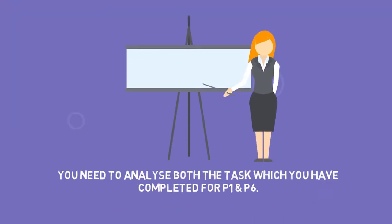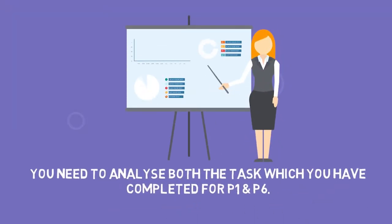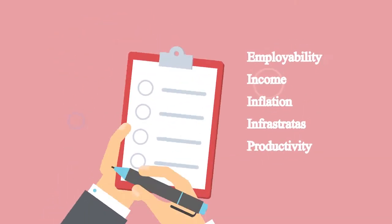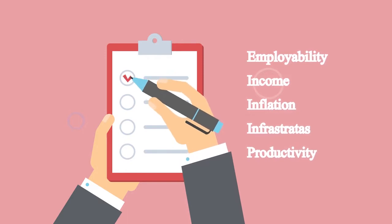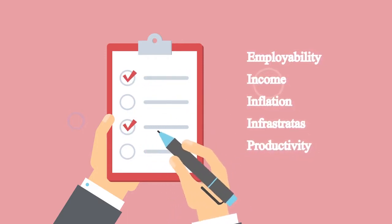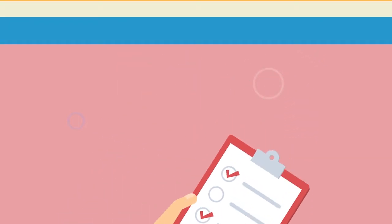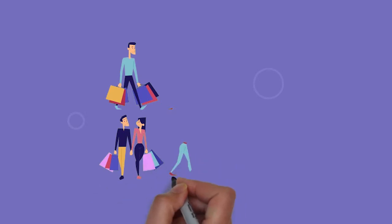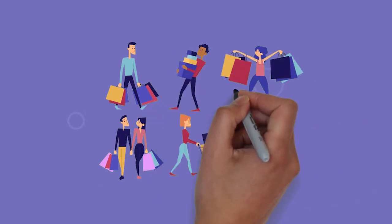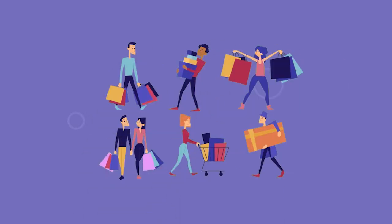You need to analyze both the tasks which you have completed for P1 and P6 and discuss the various economic factors such as the employability, the income, the inflation, the interest rates, productivity and wealth that are going to influence the buying behavior of the stakeholders such as the customers and the institutions.